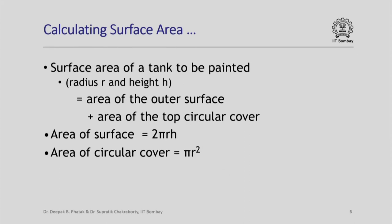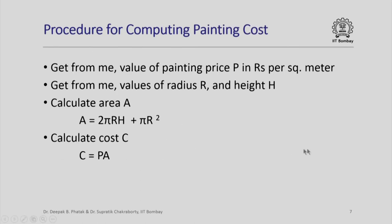Having modeled this problem in terms of the mathematical formulae needed to calculate the painting cost, we are now ready to write down a procedure for computing the cost. The procedure is written as if it will be executed by some person. So I am telling that person: get from me the value of painting price P in rupees per square meter; then get from me the values of radius r and height h; next, calculate area A = 2πrh + πr²; and the last step, calculate cost C = P × A.